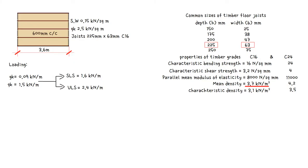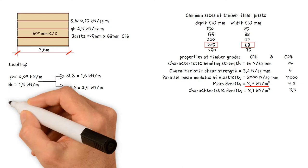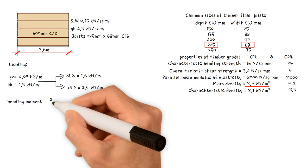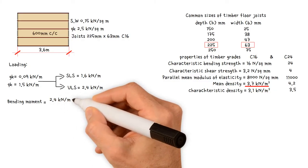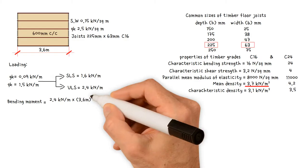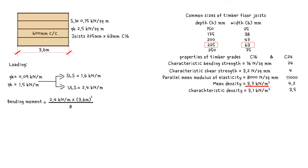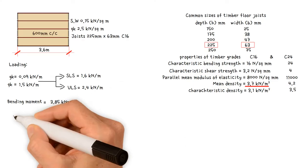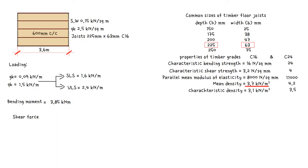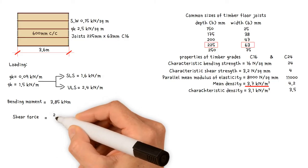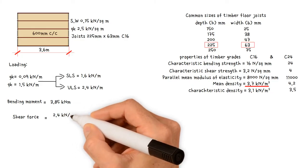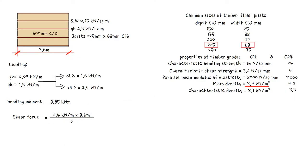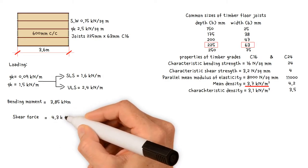We should now be able to calculate the applied design forces. The bending moment of a simply supported beam equals the design load of 2.4 kilonewtons per meter, multiplied by the span of 3.6 meters squared, divided by 8. This results in a value of 3.85 kilonewton meters. The shear force for a simply supported beam equals the design load of 2.4 kilonewtons per meter, multiplied by the span of 3.6 meters, divided by 2, giving a value of 4.3 kilonewtons.